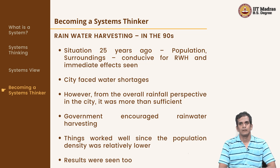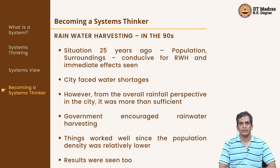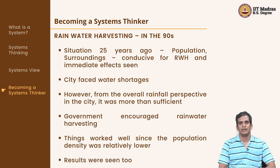Hence, town planners and the government started advocating rainwater harvesting, because a lot of the surface water rain was just getting mixed with the drains and was not being usefully used. The government also brought in a policy to mandate houses and apartments to implement rainwater harvesting, and for those who did that, it gave very good results.